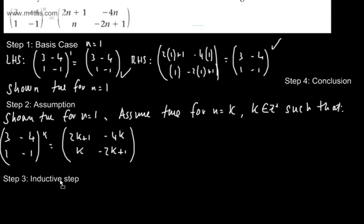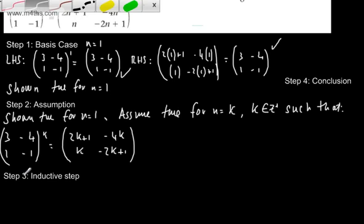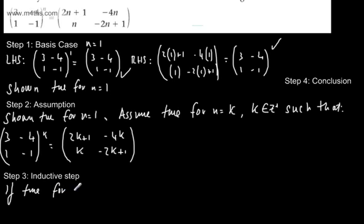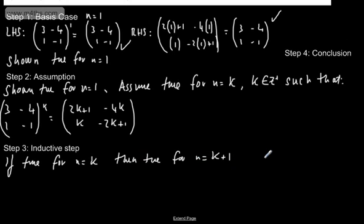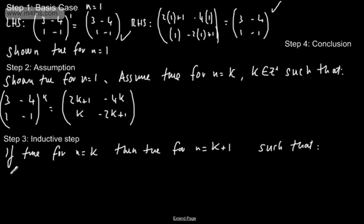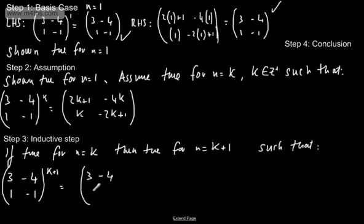Moving on to step 3, the inductive step. If true for n=k, then true for n=k+1 — if k was 5, k+1 is 6, the next positive integer. We consider the left-hand side when n=k+1: we have (3, -4; 1, -1)^(k+1), which we can rewrite as (3, -4; 1, -1)^k multiplied by (3, -4; 1, -1)^1, since when multiplying we simply add the powers.